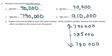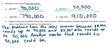E says explain why two problems have the same answer. Write another number that has the same answer when rounded to the nearest thousand. So we're looking at A and B, because they both had 90,000. My explanation reads the problems have the same answer because 88,999 rounds up to 90,000, and 85,001 also rounds up to 90,000. A number that rounds to 90,000 could be 94,999, and that one would round down to 90,000. Anything between 85,000 and 94,999 would be correct for another number.